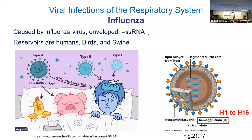Just a reminder: flu strains are designated H-something and N-something, like H1N1 or H2N5. That designation refers to the profile of two proteins found on the surface of the flu virus — the hemagglutinin (H) and the neuraminidase (N).